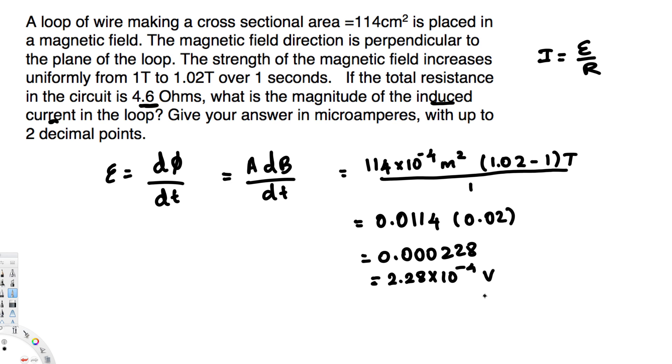Now we have the EMF, we have the resistance provided, so we can find out our induced current. I is equal to EMF divided by the resistance. EMF we just found is 2.28 times 10 to the power of minus 4, divided by the resistance that is 4.6 ohms. If you calculate this one you will end up with 49.65...